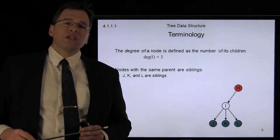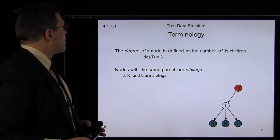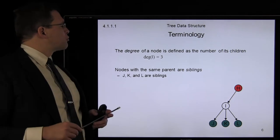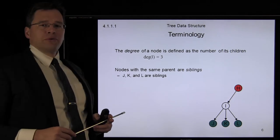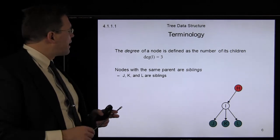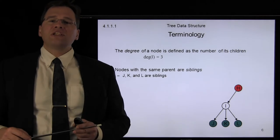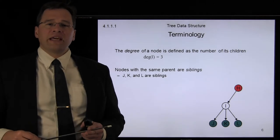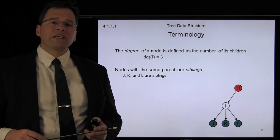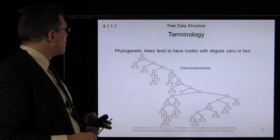The number of children within a node is said to be the degree of the node. So, in this case, node I has degree three, and its children J, K, and L are said to be siblings.